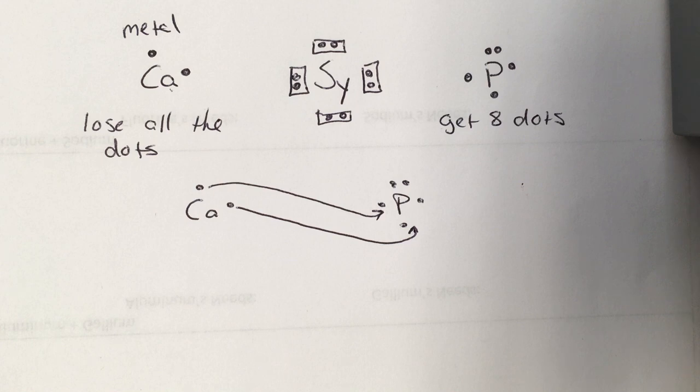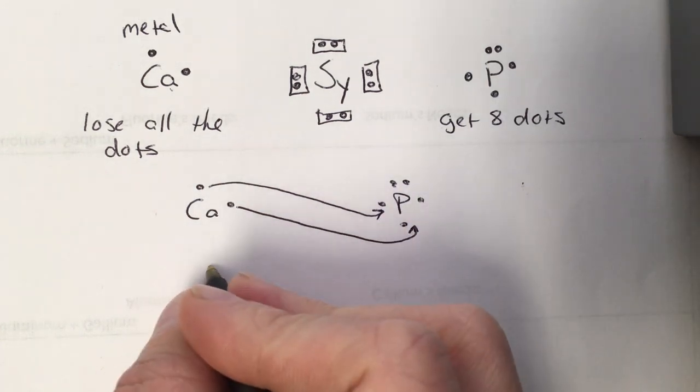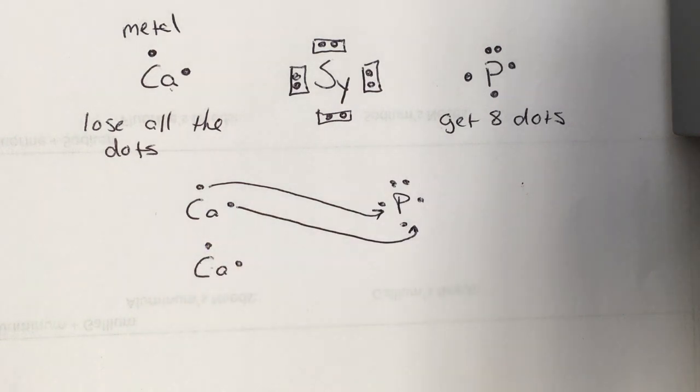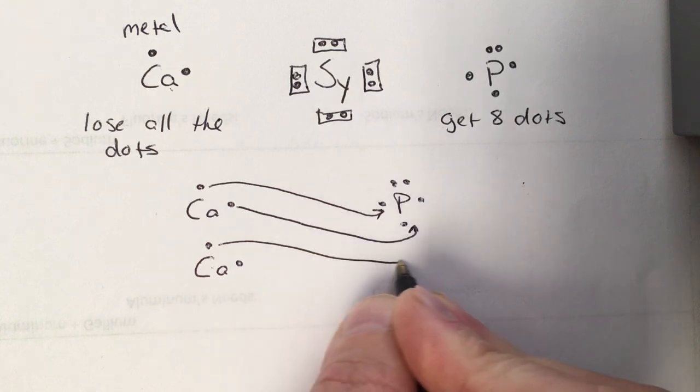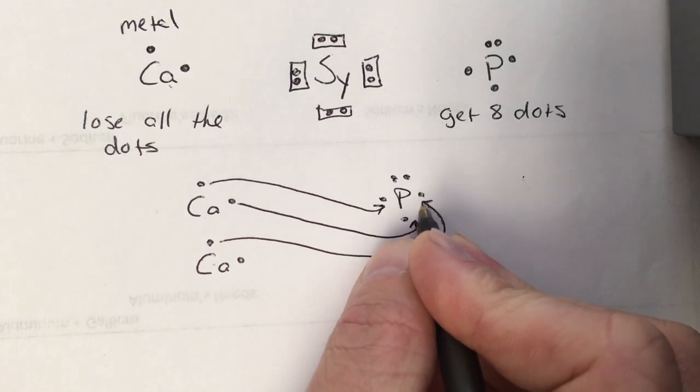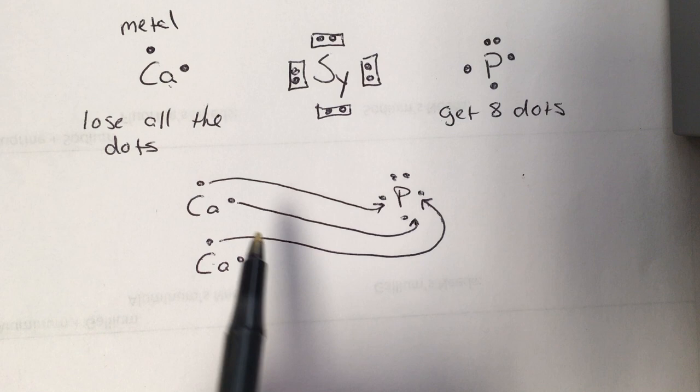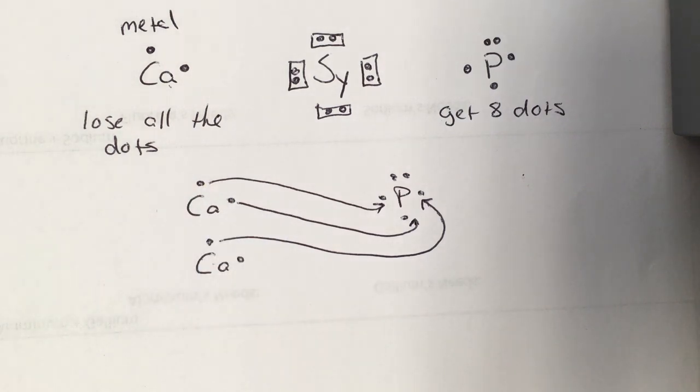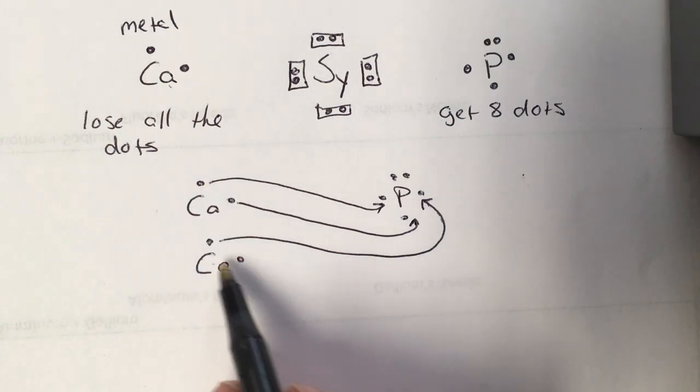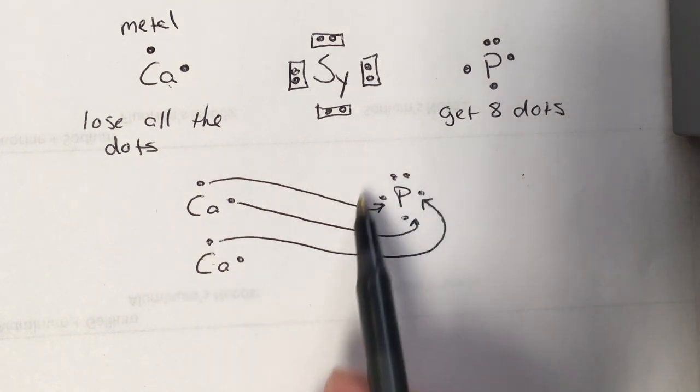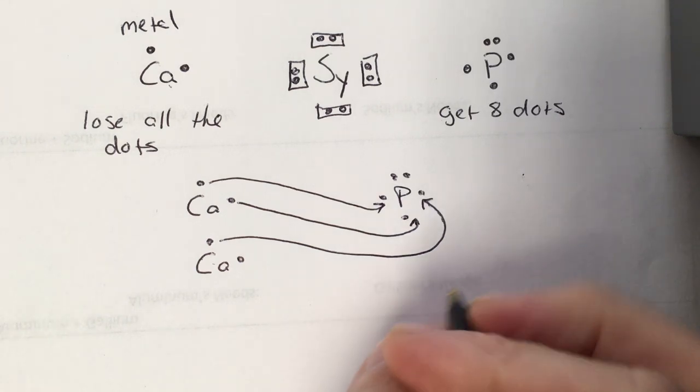Whenever that happens, we're one short on what our non-metal needs. We bring in another atom of our metal. And that new atom can provide that last electron that the phosphorus needs. And again, we reassess. We look back and say, okay, are my metal atoms happy? Well, that one's happy because it lost both of its electrons. But this one is not because it only lost one. It still has one more to get rid of, and this phosphorus is full. It's taken all it can take. So when that happens, we just bring in another phosphorus.